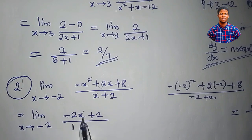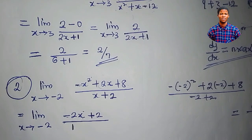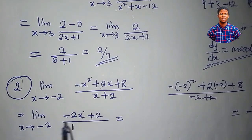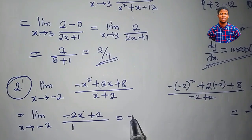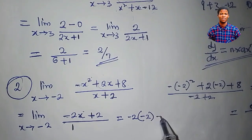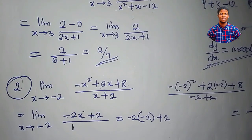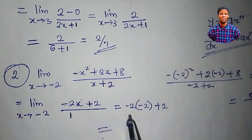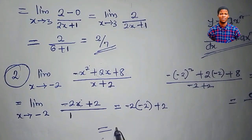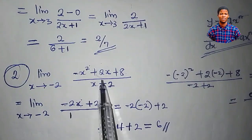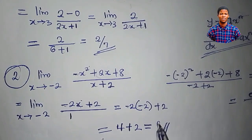If I plug in minus 2 here, I won't get 0 over 0. The limit is now simple — plug in minus 2: minus 2 times minus 2 is plus 4, and 4 plus 2 is 6. So the limit of this function as x approaches minus 2 is equal to 6.